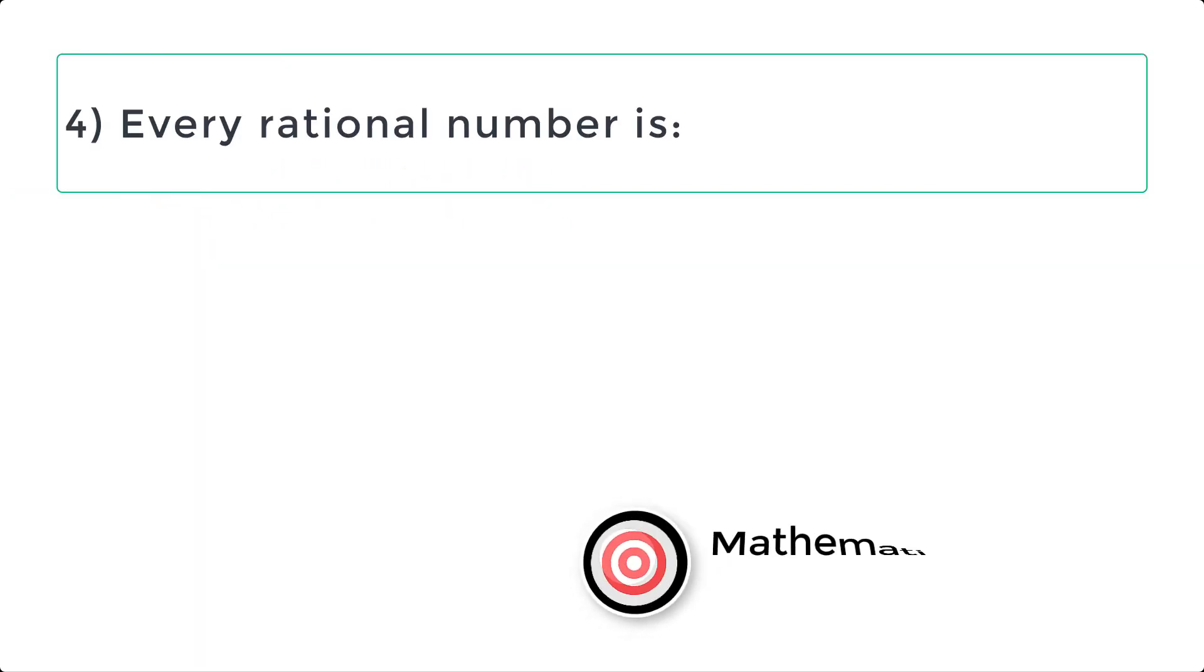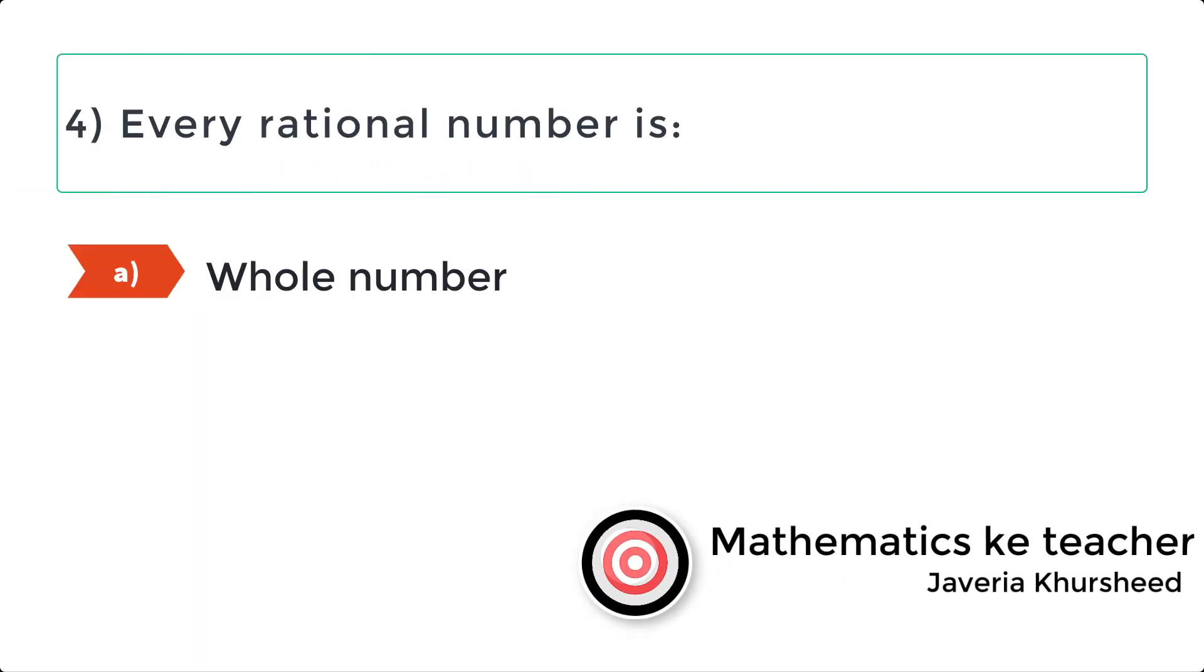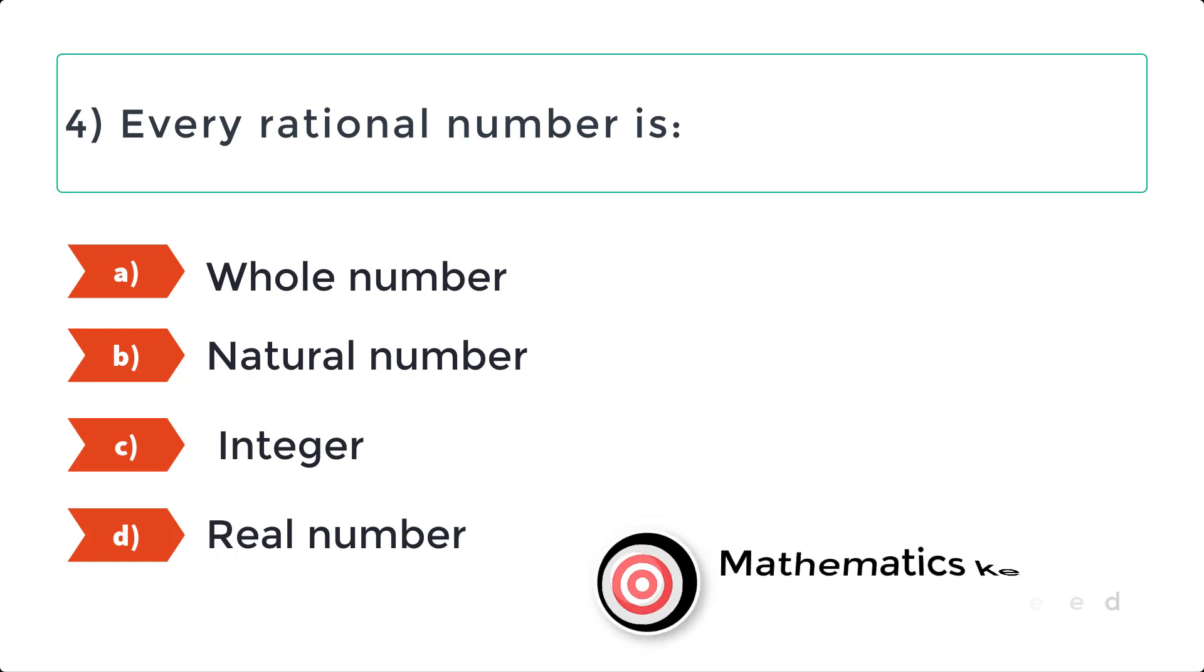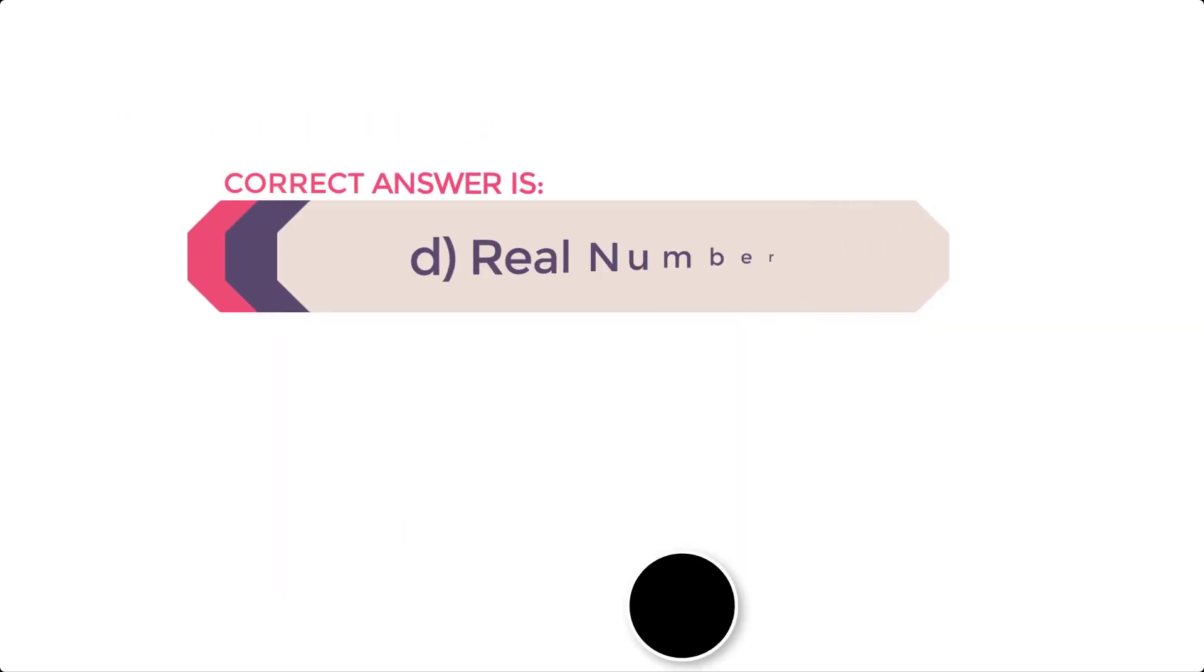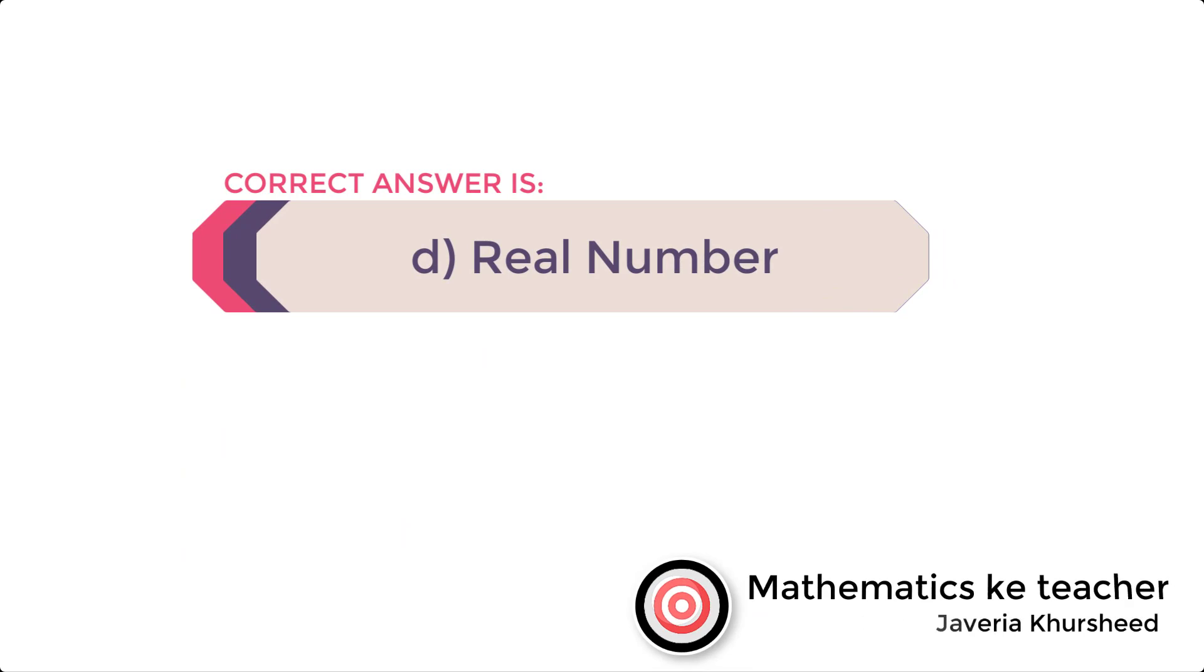Question 4: Every rational number is A: whole number, B: natural number, C: integer, D: real number. Correct answer is D, real number.